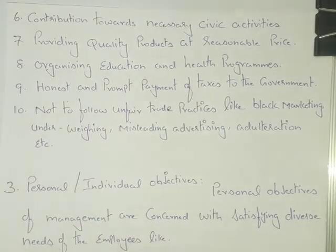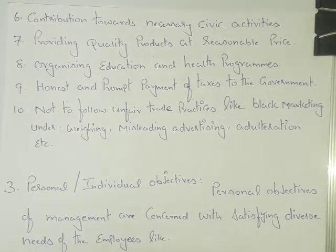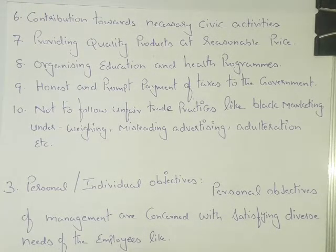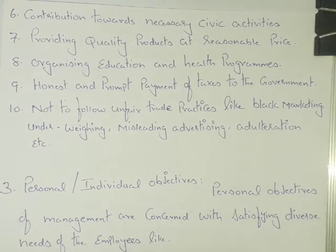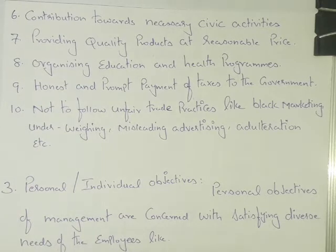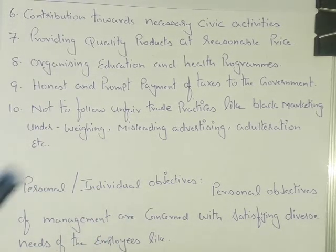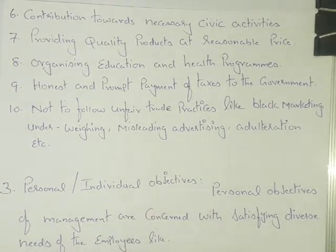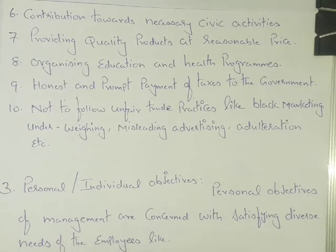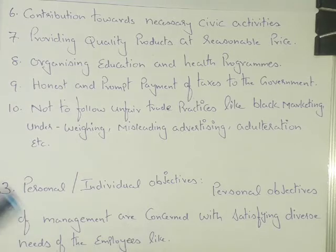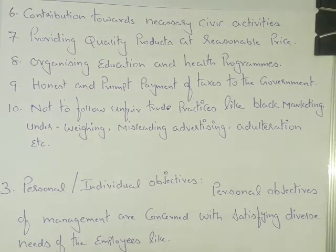Unfair trade practices include black marketing, under-weighing, misleading advertising, adulteration, etc. If you are going to promote a product of your company, it should be done perfectly and should not lead to misleading advertisements. You should not involve in illegal activities such as black marketing, under-weighing, or adulteration. Unfair trade practices are purely not allowed under the social objectives of management.